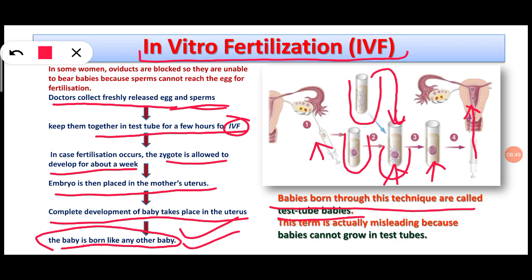However, the term 'test tube baby' is misleading because babies cannot actually grow in a test tube. The fertilization takes place in laboratory conditions inside a test tube. Whenever we perform a natural phenomenon in an artificial setup in a laboratory, we add the term 'in vitro' — which is why this is called in vitro fertilization.